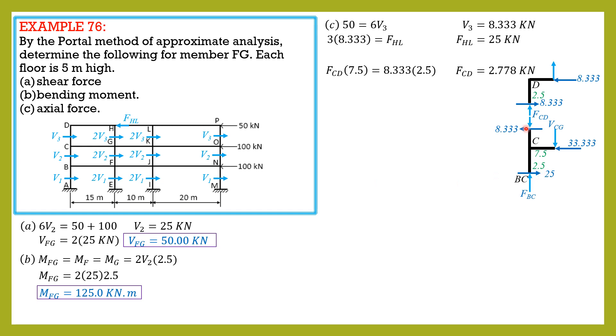So for this portion of the free body diagram, moment about this point to solve for FBC. So FBC times 7.5 is equal to 8.333 times 2.5 plus FCD, 2.778 times 7.5, plus 25 which is v2, times 2.5.